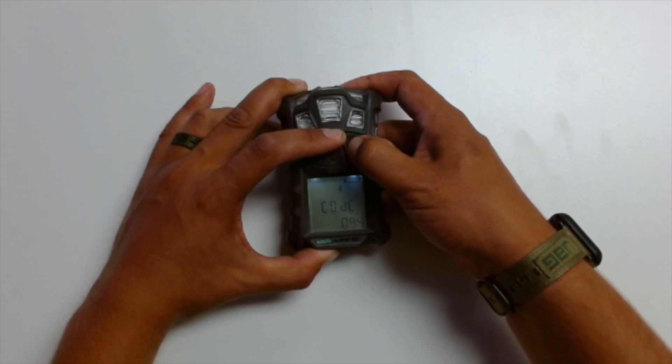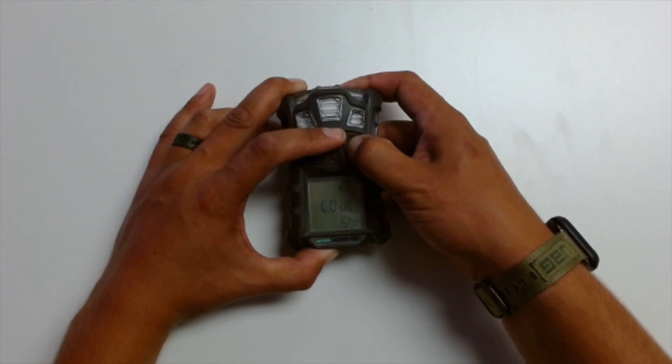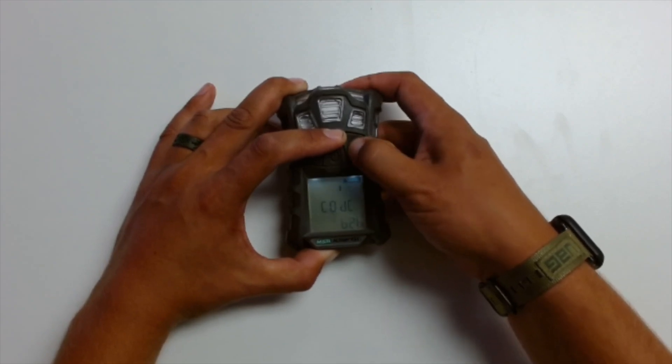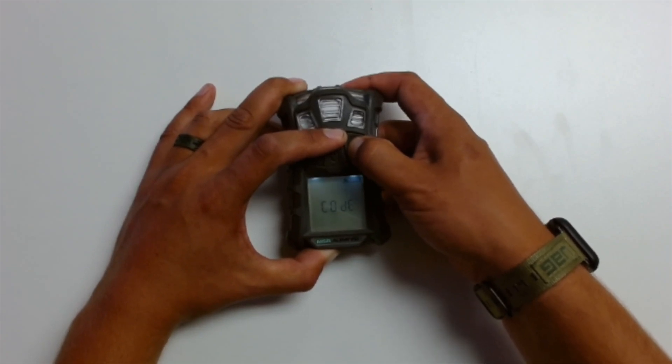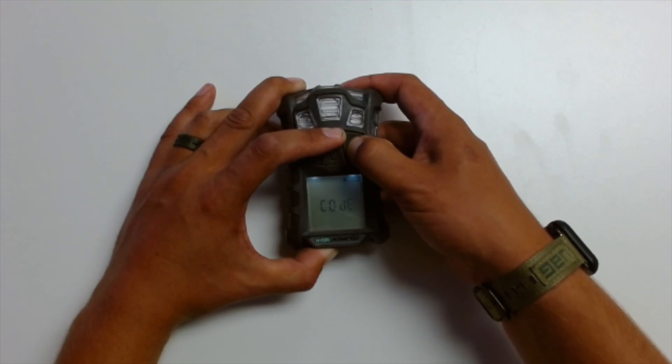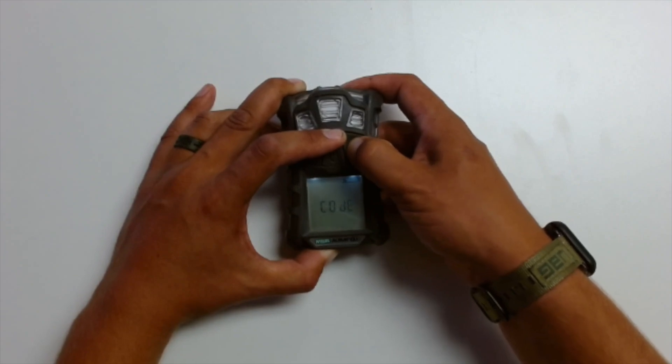That's going to bring me to a code screen and the code for entering the main menu is 672. One way to remember that is if you look at a phone keypad when you're dialing numbers, your 6 is going to correspond with M, your 7 is going to correspond with S, and your 2 is going to correspond with A.